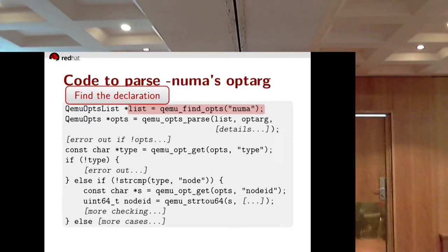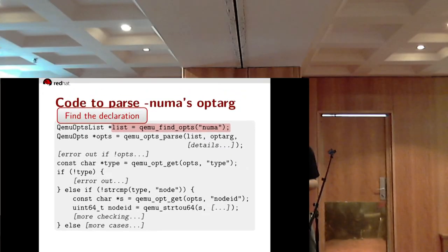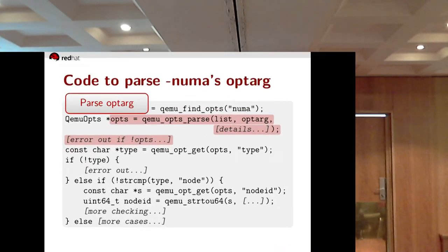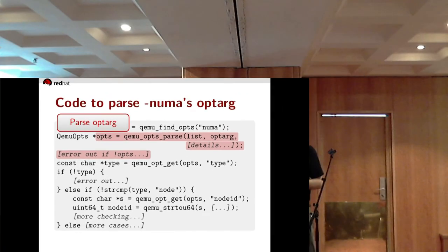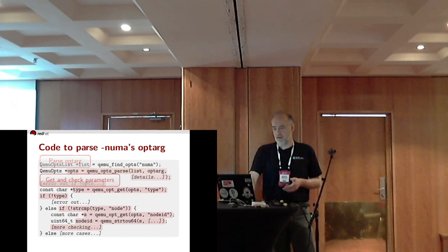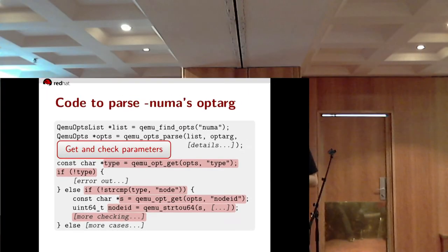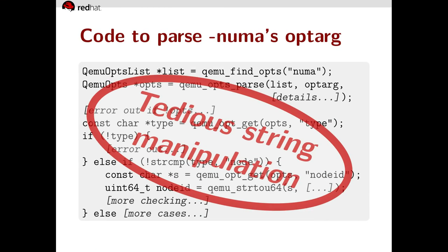Here's the code to parse dash-numa's option argument. First we find the declaration we just saw, then we use it to parse the option argument, and then we laboriously get and check all the parameters — lots and lots of tedious string manipulation.